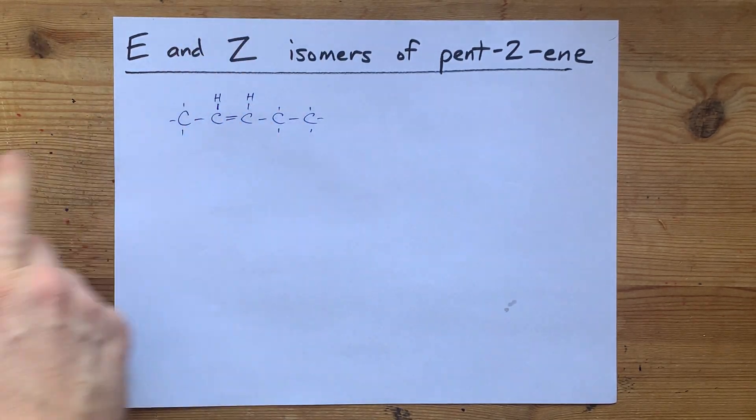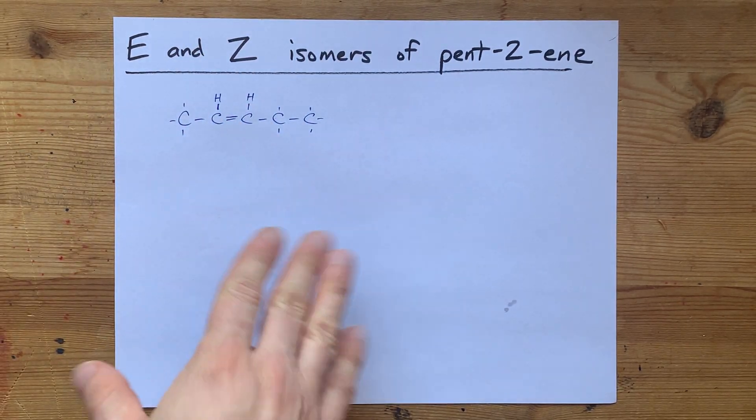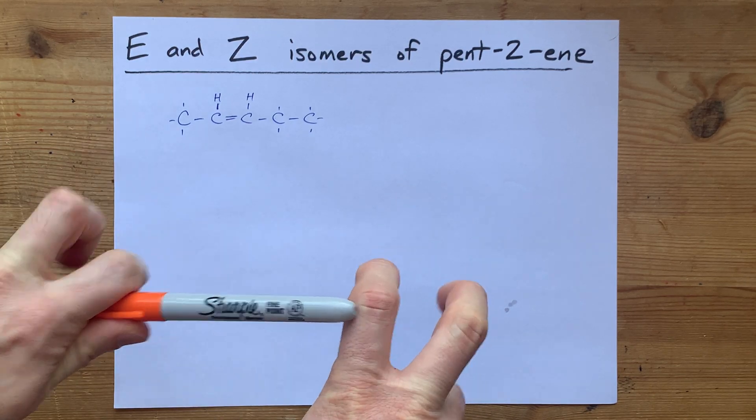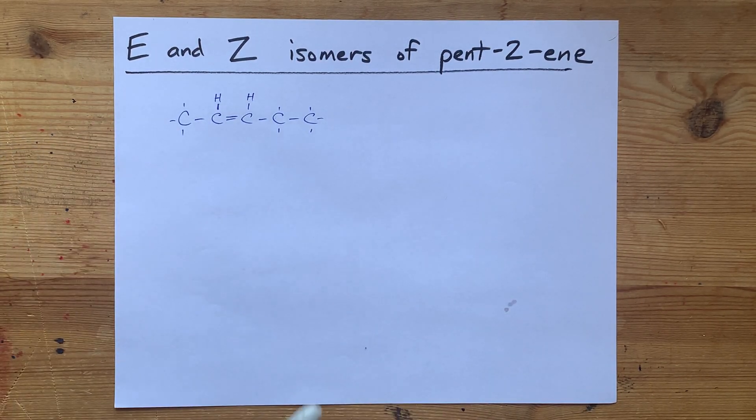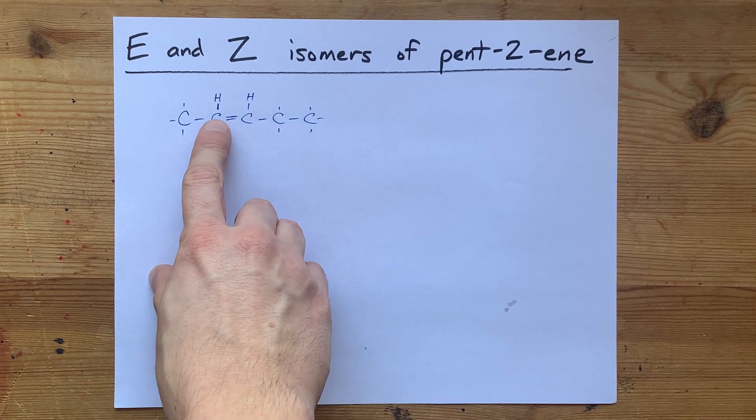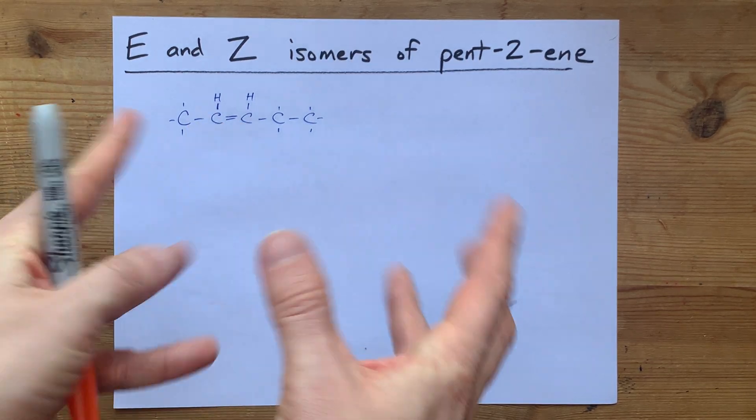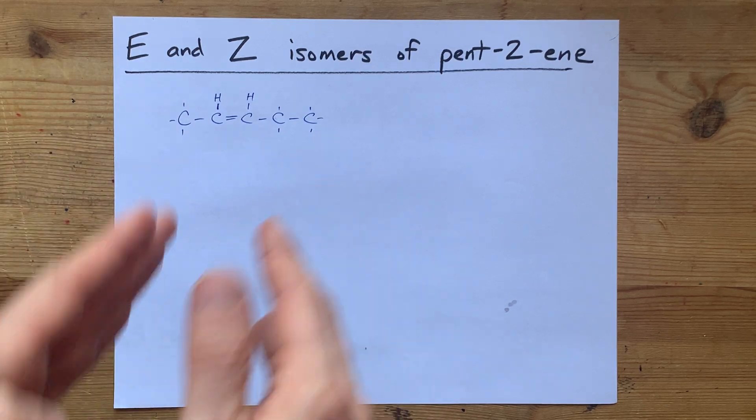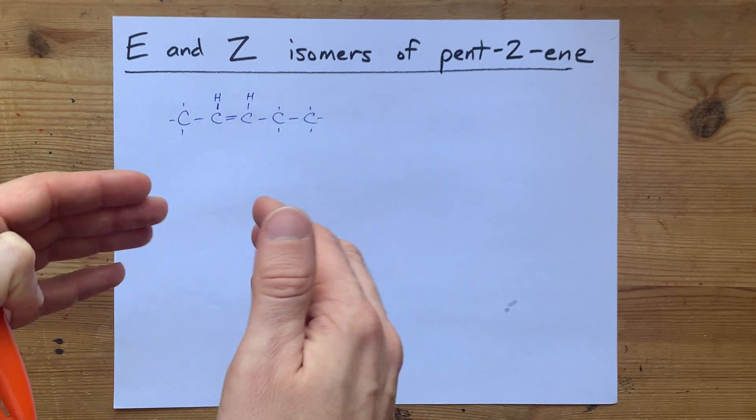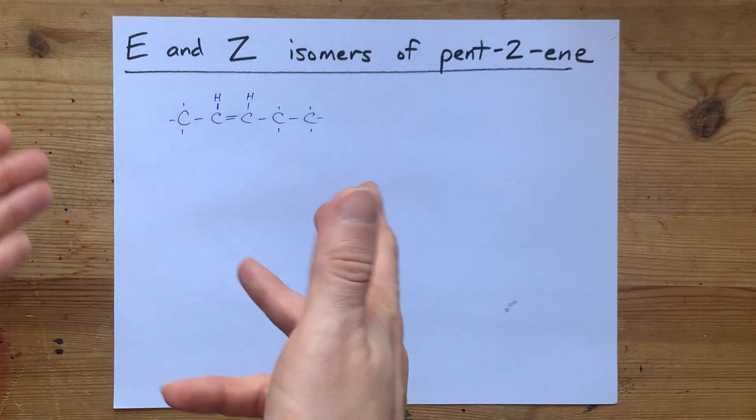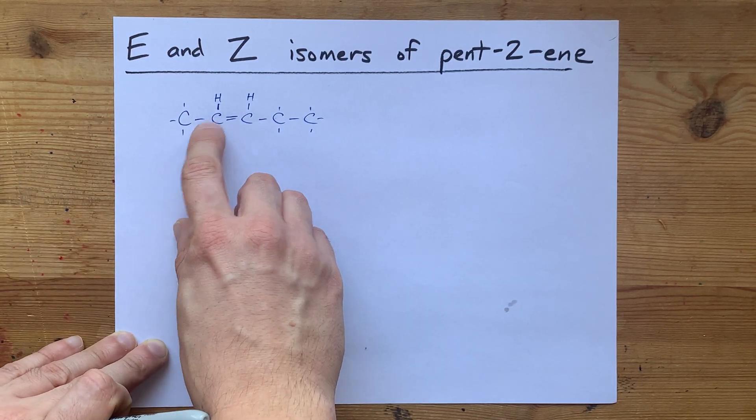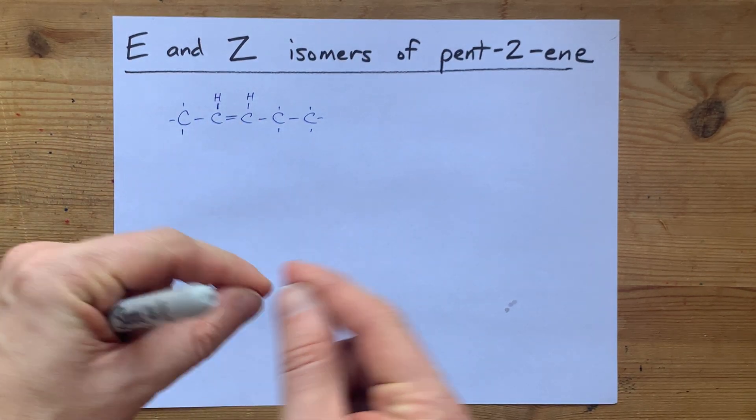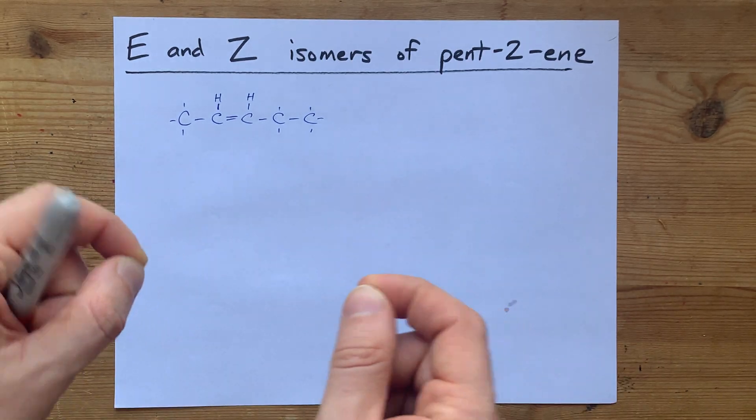But you're here for E and Z. E and Z designations use Cahn-Ingold-Prelog numberings or priority systems. The idea is that each of these carbons is a branch point, and you're going to have to figure out what's connected to either branch. This first carbon has a C versus an H. And I'm just going atom by atom here until I find a difference.